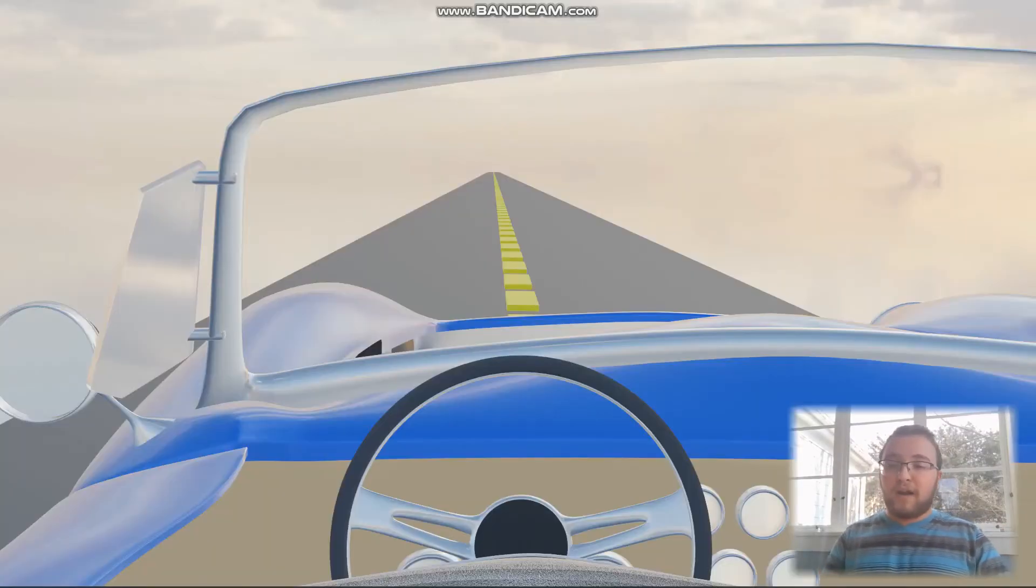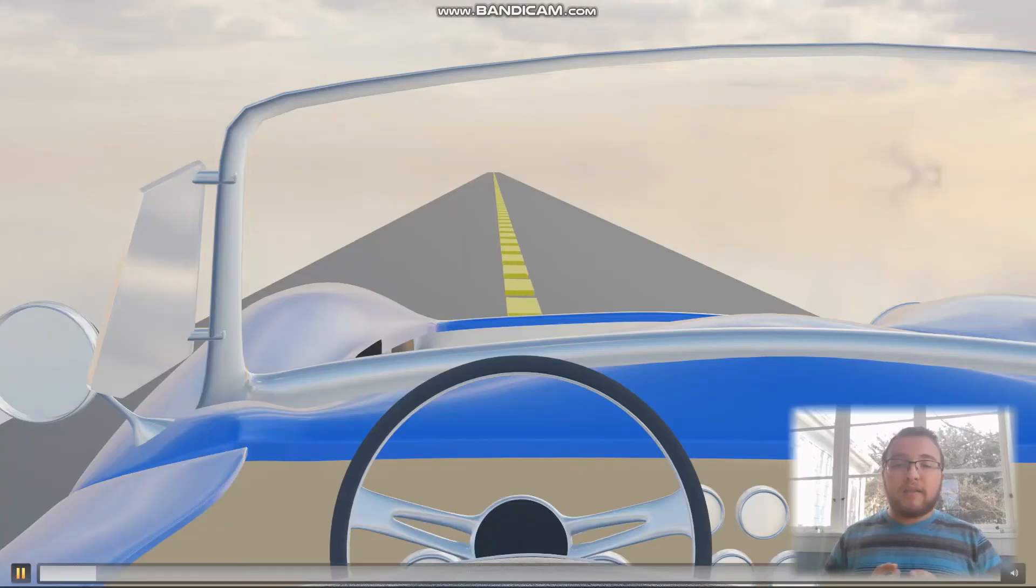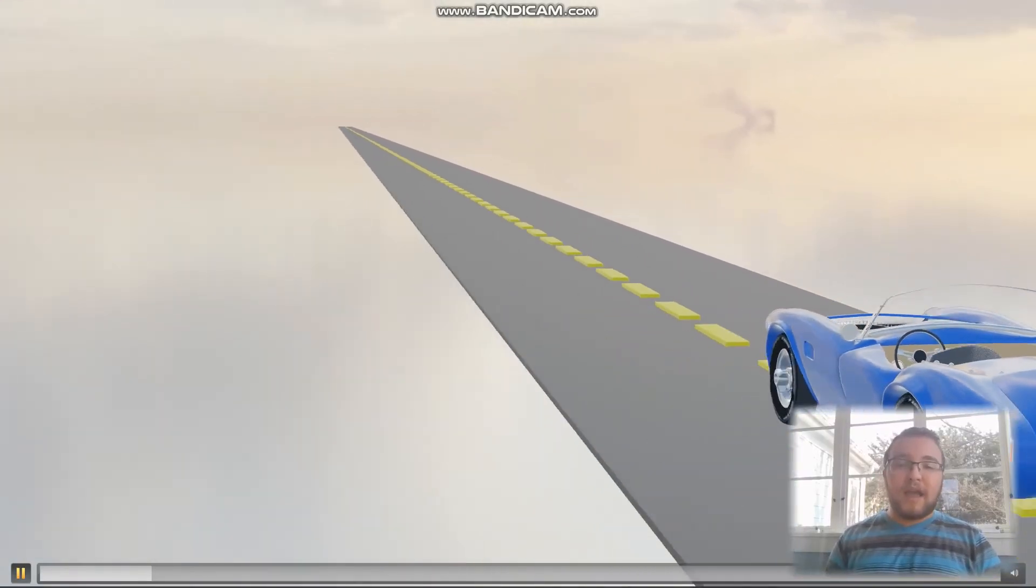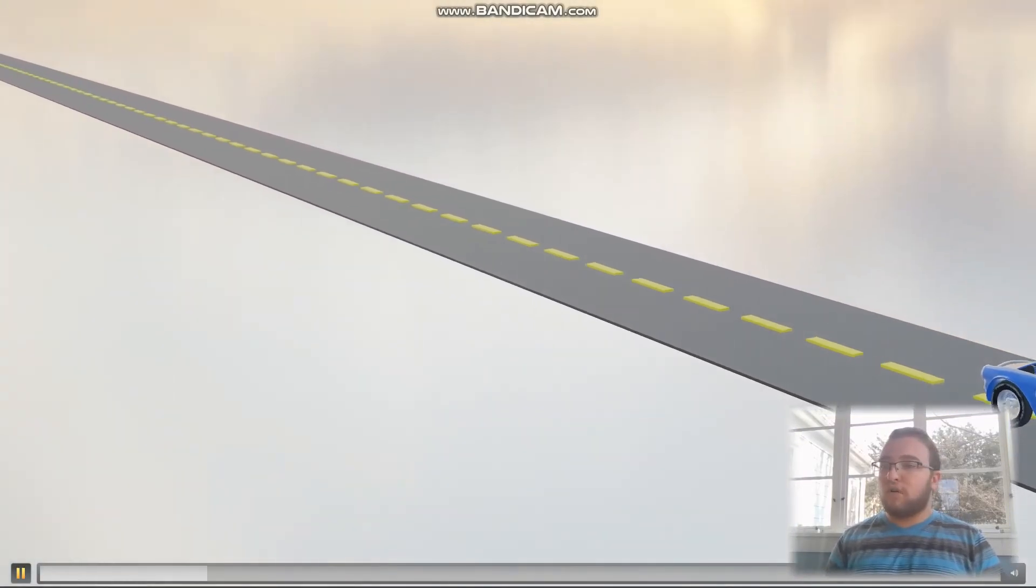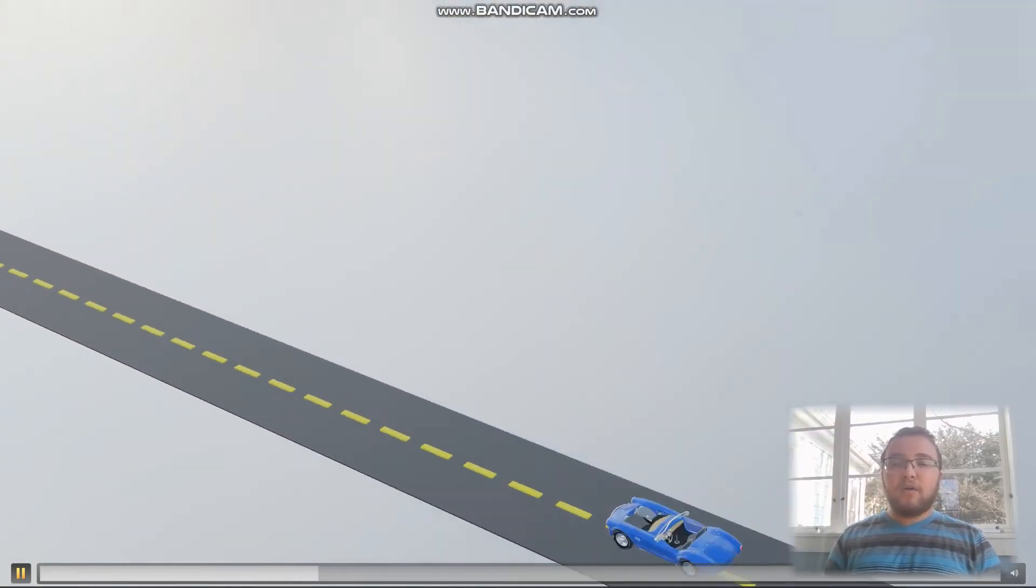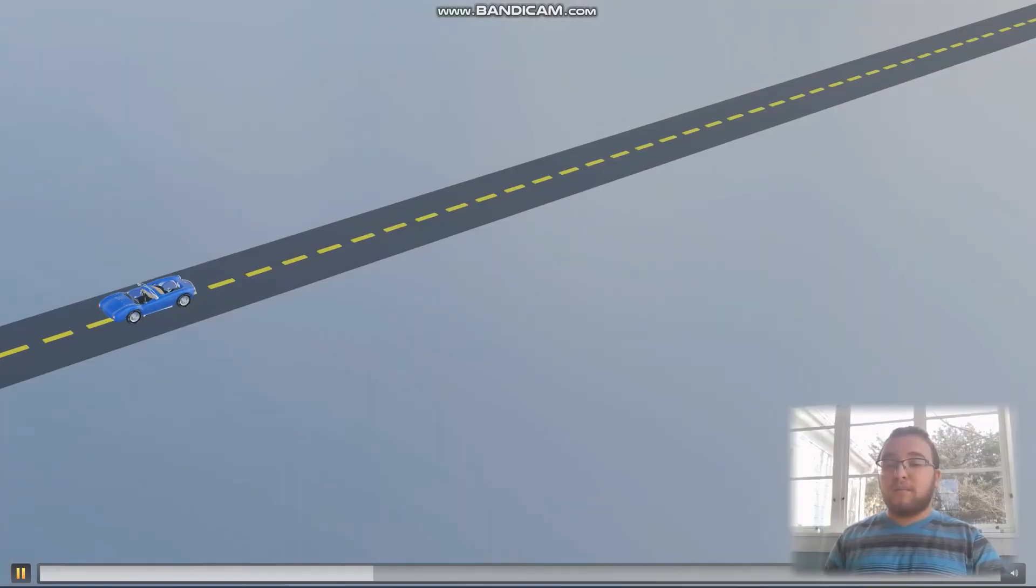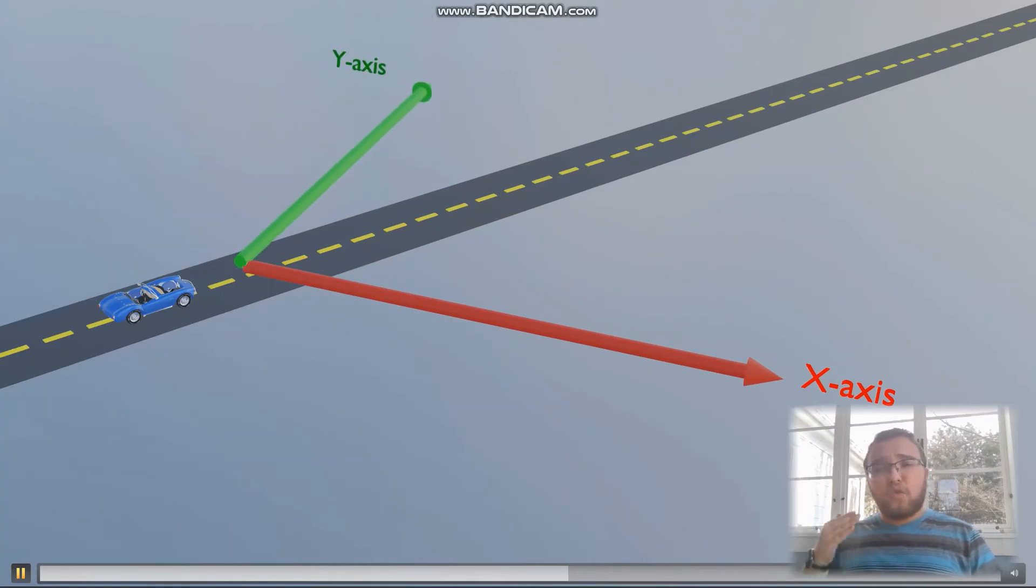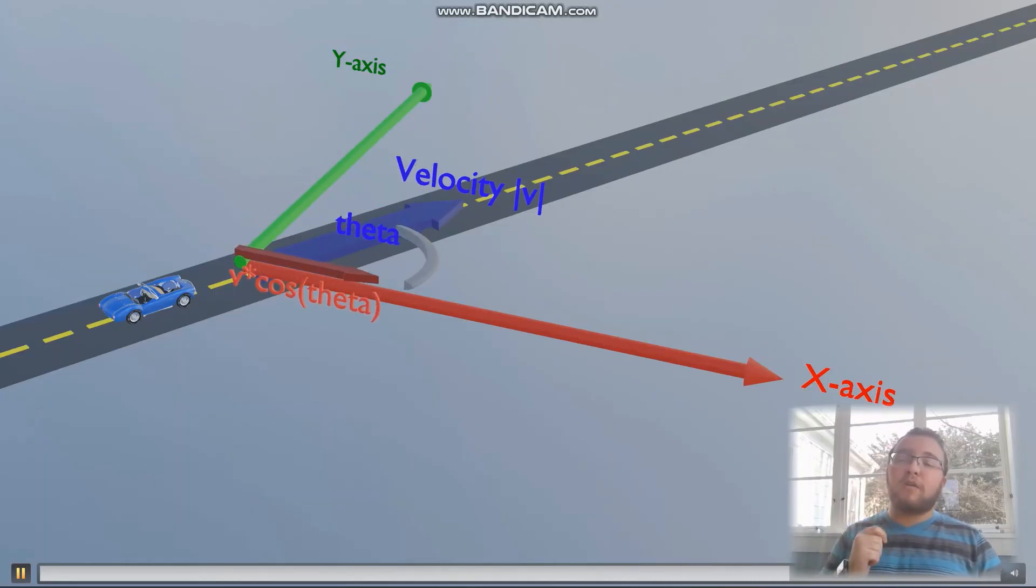So we're going to go back to our animation and see what we can find. So we have our car going down our road again, and it has a certain velocity. But now, instead of it being purely in one dimension, we're going to set up a coordinate axis so that our velocity is between the x and y axis. It's not purely in the x or purely in the y. We have an angle theta.